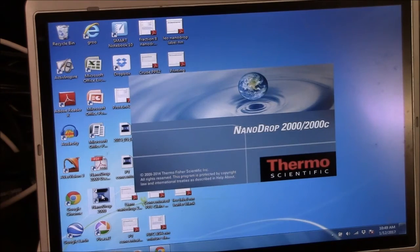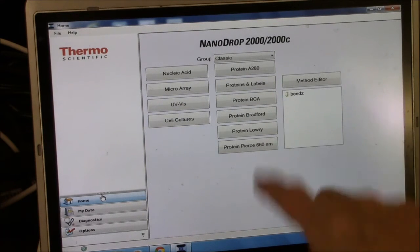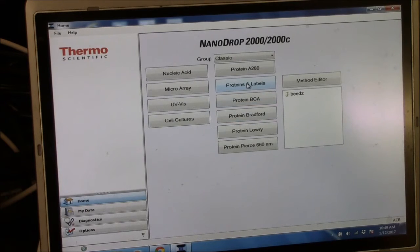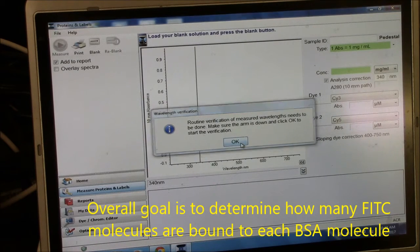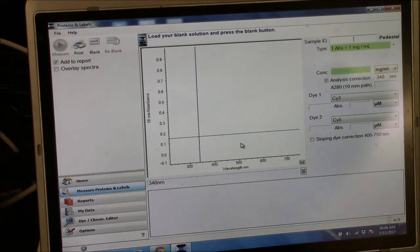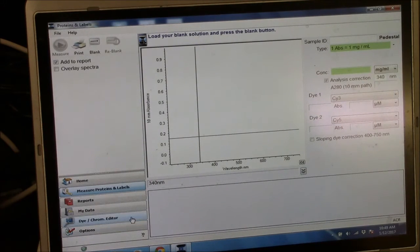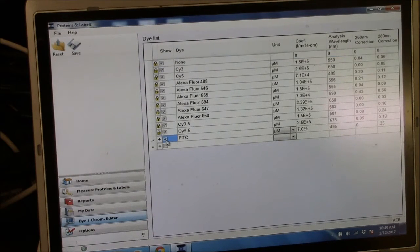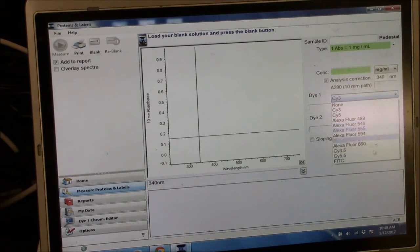Opening the NanoDrop software. The choice I want here is proteins and labels, which includes measurement of protein as well as some dye that is attached to the protein. This is routine. The dye I want to choose here will be FITC, Fluorescein Isothiocyanate. It's not currently listed so you'll have to go over here to the dye editor and choose FITC, click it and then that choice should be available here, FITC.